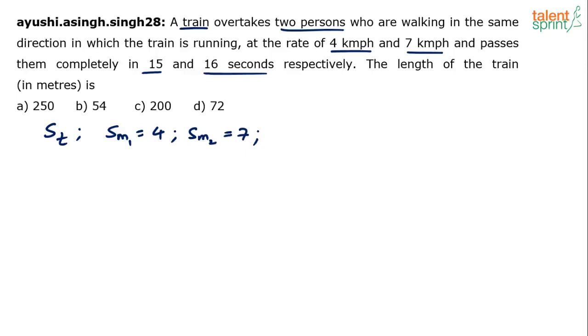Now what is the equation to be used? When a train is crossing a man and when both the persons are running in the same direction, we have to take the difference of the speed - the relative speed concept. So speed of the train minus the speed of the man should equal the distance travelled. The distance travelled here is nothing but the length of the train, because the length of the man is considered to be negligible, divided by the time taken. This is the equation, and we will have two such equations.